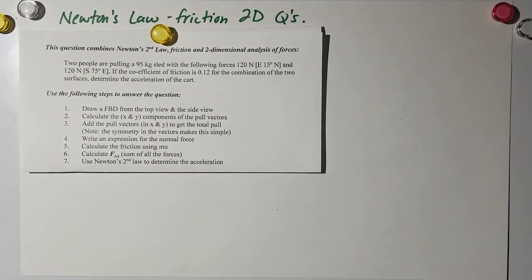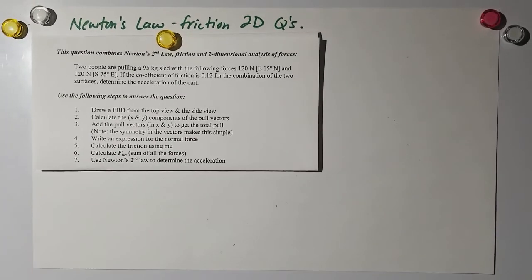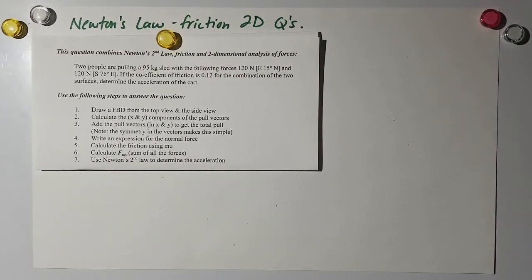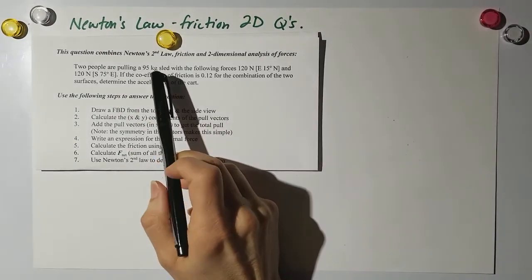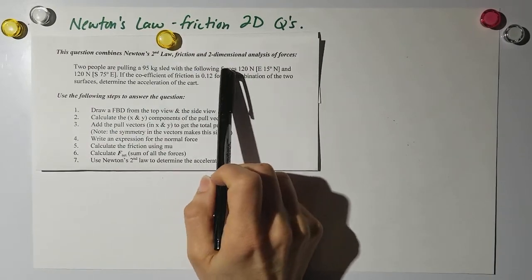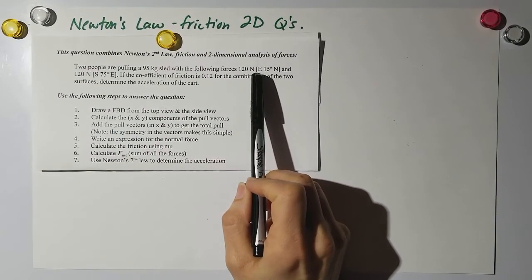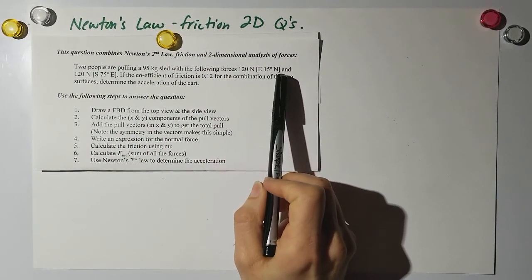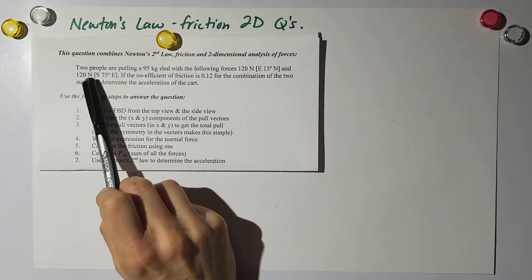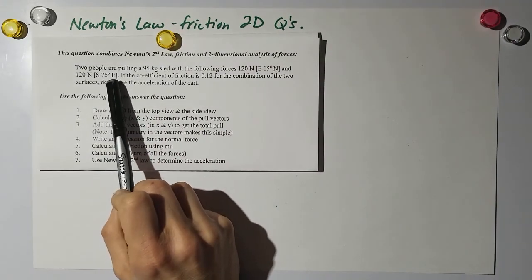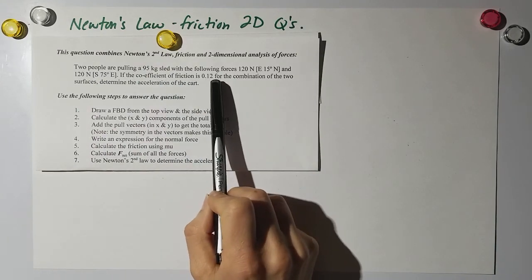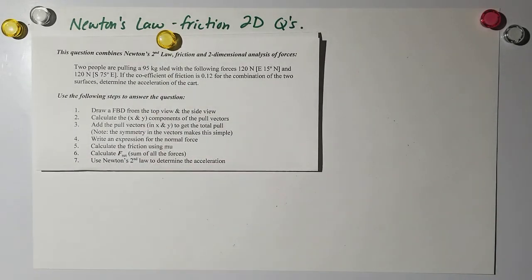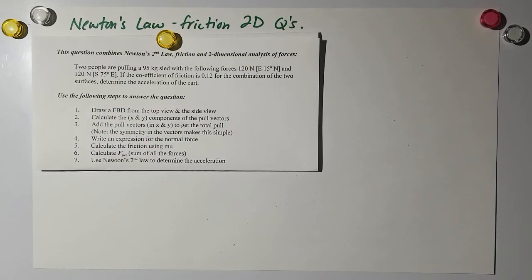Alright, so for this question I asked you guys to try this on your own. Let's see how you did. We have two people pulling a 95 kilogram sled with the following forces: 120 newtons east 15 degrees north and 120 newtons south 75 degrees east. If the coefficient of friction is 0.12 for the combination of the two surfaces, determine the acceleration of the cart.